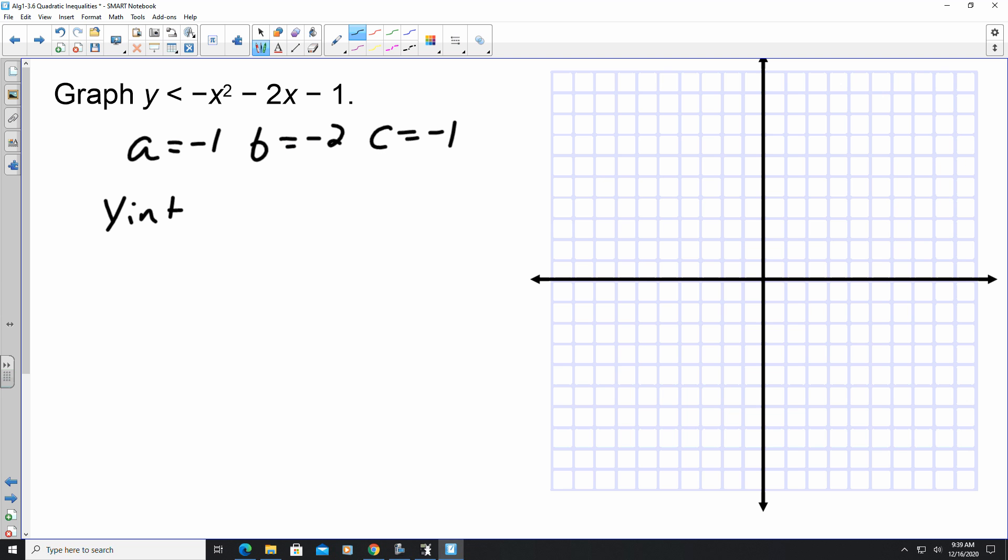Looking at my y-intercept, it's coming from 0 comma c, so it's 0 comma negative 1. So I plot that point right there. My axis of symmetry is going to be x equals negative b, so positive 2 divided by 2 times a, which is negative 2. So this is going to turn out to be negative 1.